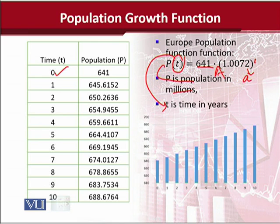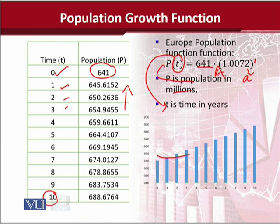In the table, assuming that no time has passed — that is, we are talking about this moment — the population would be 641 million. As we put greater values of t, the population is increasing, and that increasing trend lasts till the last assumed value, which is t equals 10. When we plot this, we can see a graph showing exponential growth, though the trend is less intense in this case.